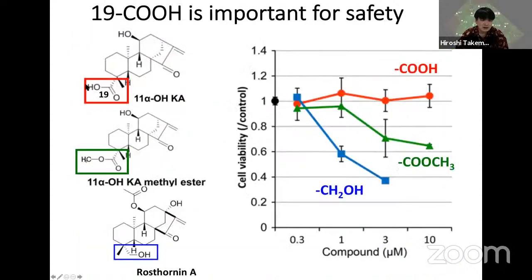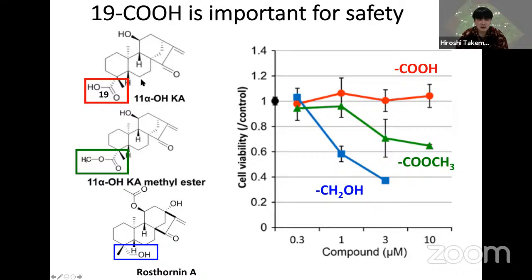We purchased other types of kaolenic acid and performed structural activity relationship studies. We found the importance of 11-hydroxylation, 15-oxylation, and 16-N — these are all essential. Lack of any one moiety abolishes melanogenesis suppression activity. Additionally, the 19-position is important for cellular toxicity: if position 19 has a carboxyl group, no cellular toxicity is found, but methyl or ethyl modifications cause cellular toxicity. So the 19-position is critical for safety.